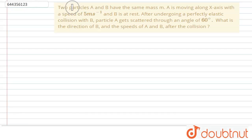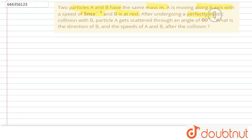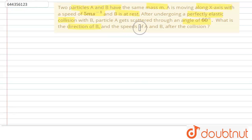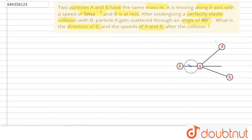Hello, the question is: two particles A and B have the same mass M. A is moving along the x-axis with a speed of 5 meters per second and B is at rest. After undergoing a perfectly elastic collision with B, particle A gets scattered through an angle of 60 degrees. What is the direction of B? We have to calculate the angle of recoil and the speed of particles A and B after collision. Particle A was initially traveling with U1 equals 5 meters per second and B was at rest.